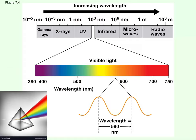Before talking about photosynthesis specifically, let's familiarize ourselves with light and pigments. Light is a form of electromagnetic energy. Everything in this chart — gamma rays, X-rays, UV rays, infrared, microwaves, radio waves — is a form of electromagnetic energy. What differs between them is the length of their wavelengths.